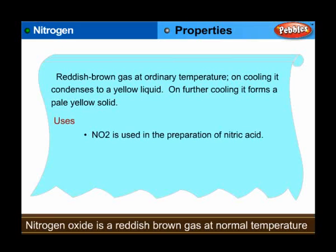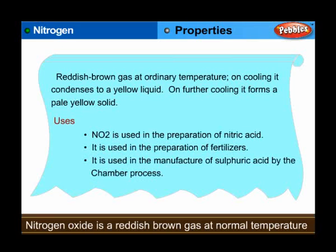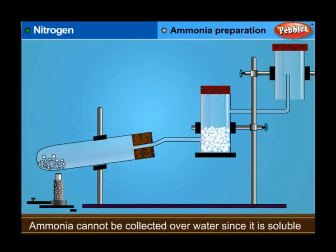Uses: NO2 is used in the preparation of nitric acid and fertilizers. It is also used in the manufacture of sulfuric acid by the chamber process.